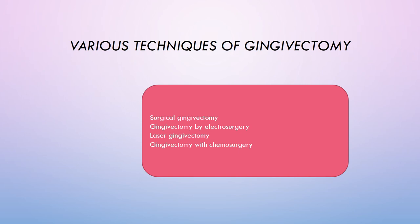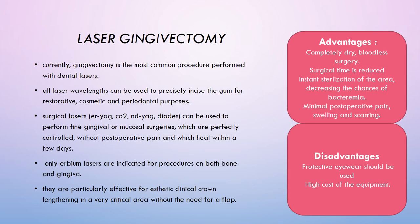Gingivectomy can be done with a scalpel, electrocautery, lasers, or chemicals. Laser gingivectomy is currently the most common procedure. All laser wavelengths can be used to precisely incise gum tissue for resective, cosmetic, and periodontal purposes. Surgical lasers — Er:YAG, carbon dioxide, Nd:YAG, and diodes — are the main lasers used for fine gingival or mucosal surgery. Only erbium lasers are indicated for procedures on both bone and gingiva, and are particularly effective for aesthetic clinical crown lengthening without the need for a flap.